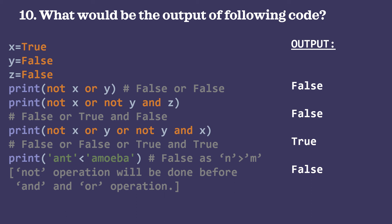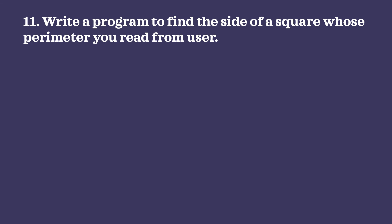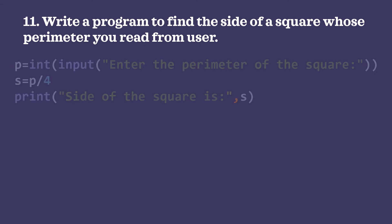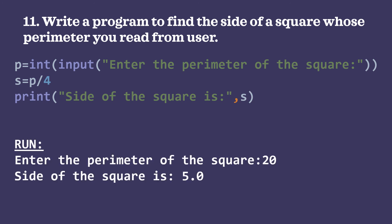Note: the not operation is performed before and/or operations. Question 10: write a program to find the side of a square given its perimeter. p = int(input('Enter the perimeter of the square: ')). s = p/4. Then print the side. Running the program with input 20 gives: the side of the square is 5.0.